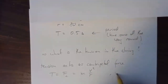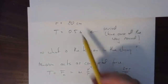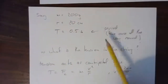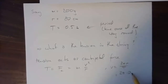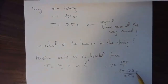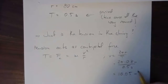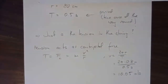Plugging in the values, V equals 2π times 0.8 meters divided by 0.5 seconds. Notice the conversion to meters so we have meters per second. Plugging those in gives just over 10 meters per second. So going twice around per second is fairly fast.